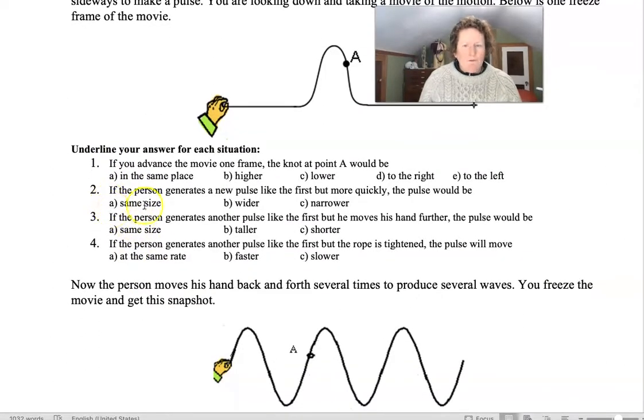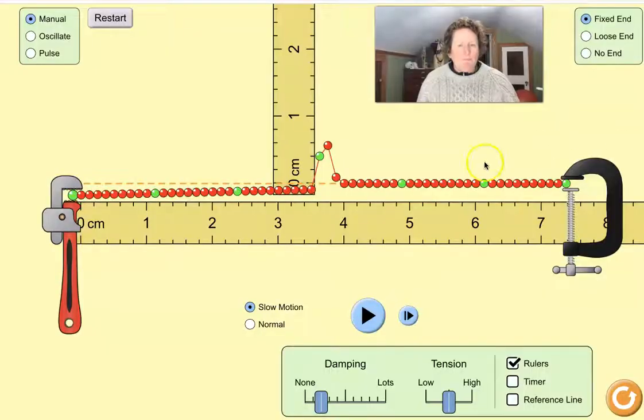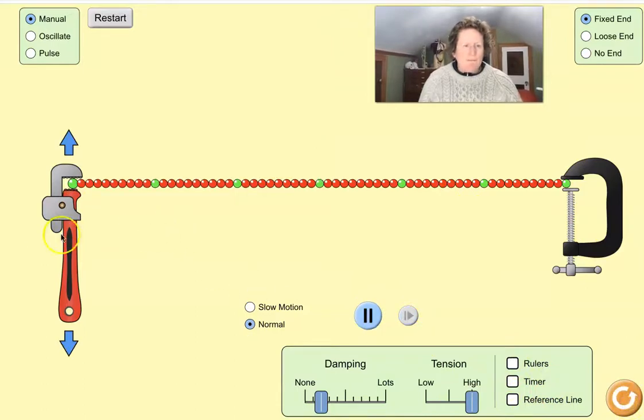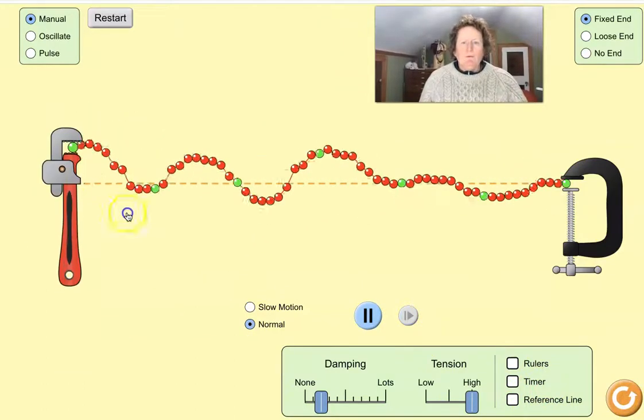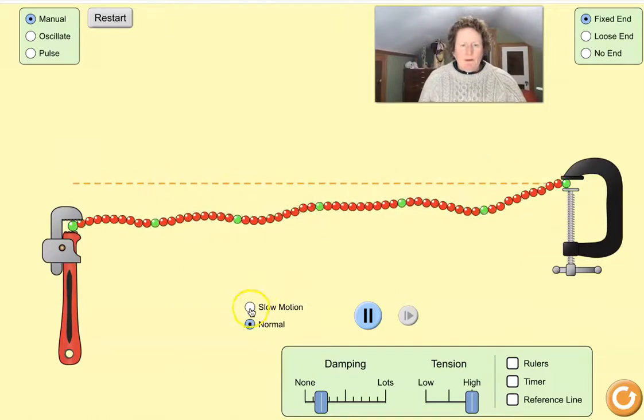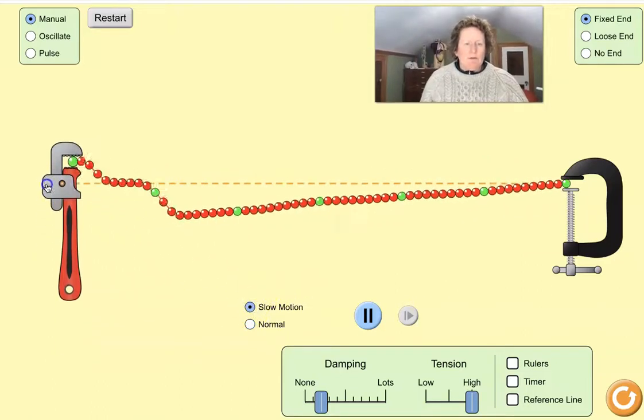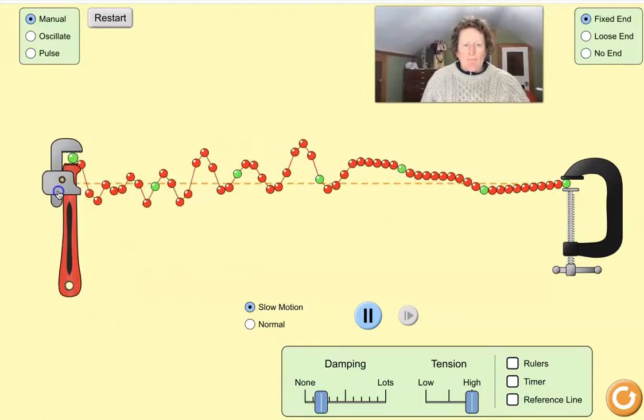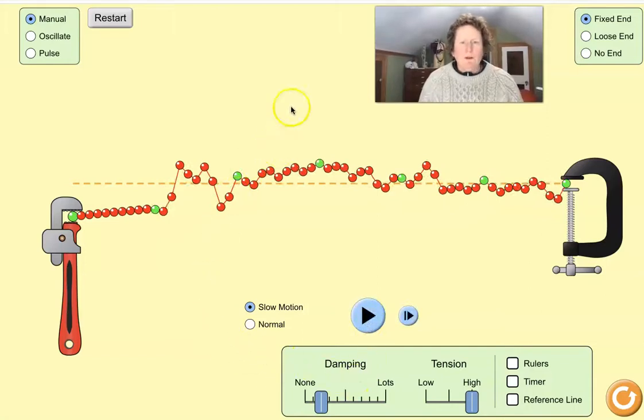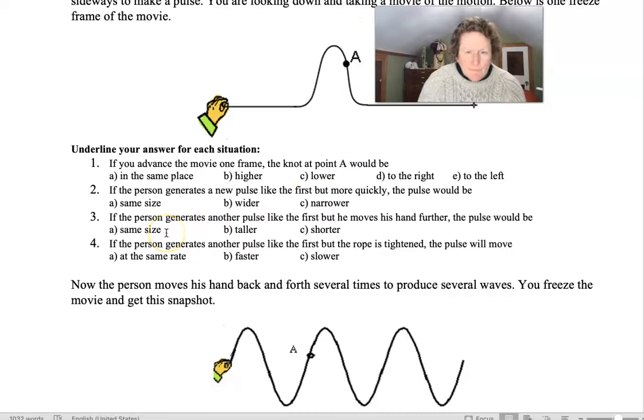You can do number two. It asks if the person generates a new pulse like the first, but more quickly. You can take the rulers away here. Let's reset. What happens if you make the waves more quickly? If you want to do that in slow motion, you can do that in slow motion and you can pause it. And look at what would happen.